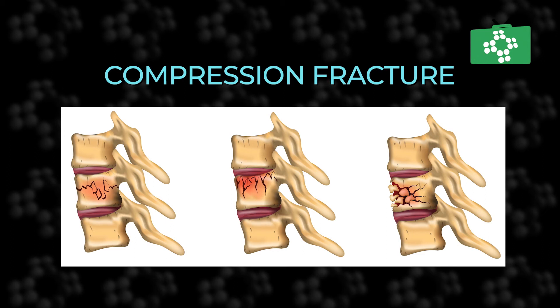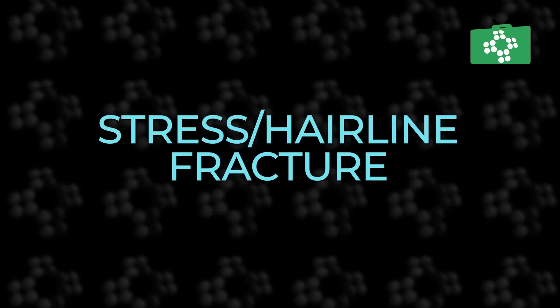Compression fractures are where the bone is crushed and the bone will be wider and flatter than before the injury. The most common area for this is the spine. Stress fractures are also called hairline fractures and are often difficult to diagnose by standard x-rays.